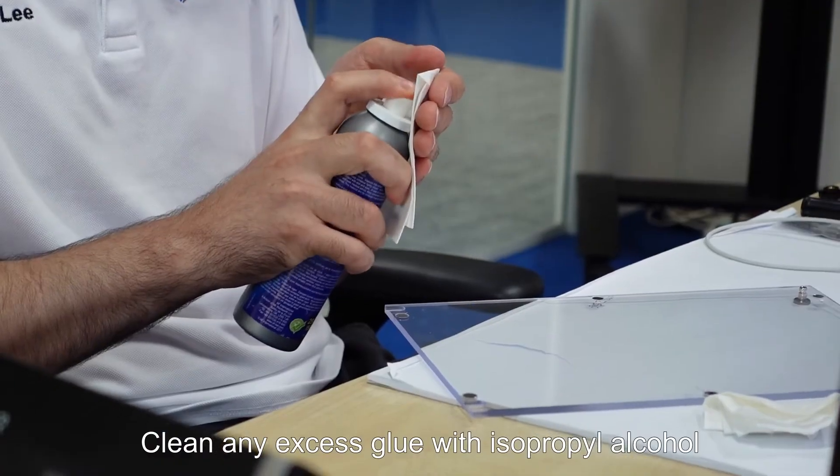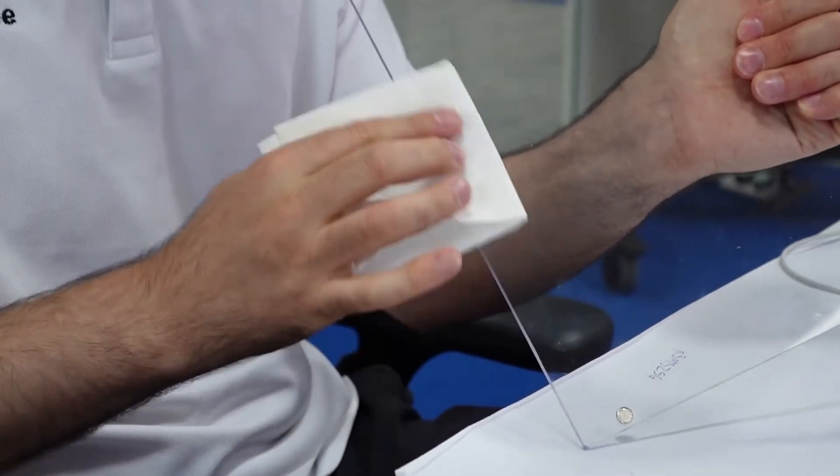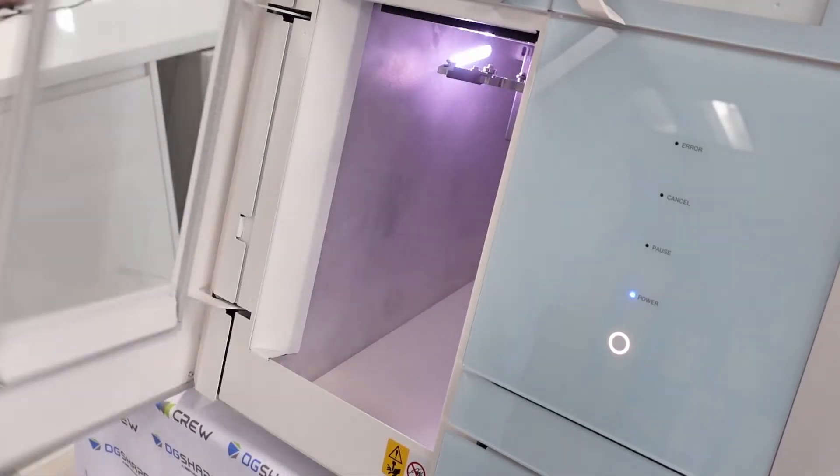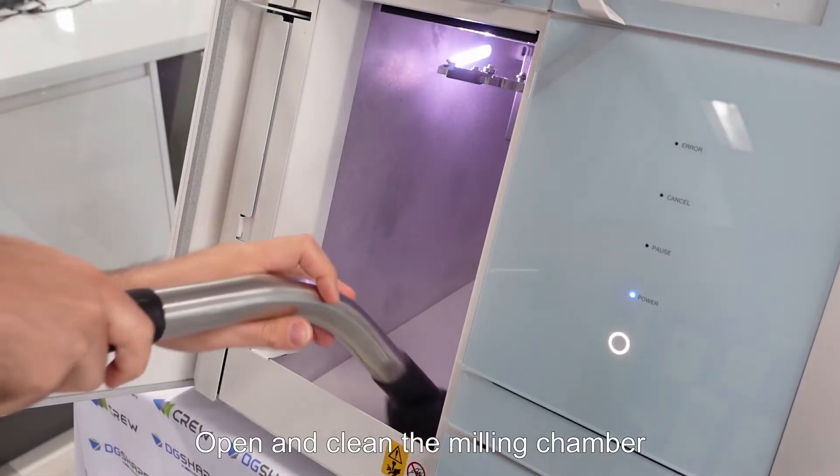Clean any excess glue with isopropyl alcohol. Open and clean the milling chamber.